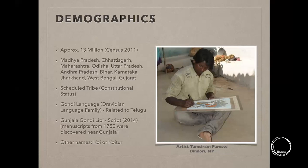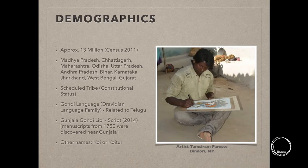According to the 2011 census, the Gond community is a large community distributed across various states — Madhya Pradesh, Chhattisgarh, Maharashtra, Odisha, Uttar Pradesh, Andhra Pradesh, Bihar, Karnataka, Jharkhand, West Bengal, Gujarat — every state has some population of Gond people. Constitutionally they are a Scheduled Tribe. Their language, Gondi, is closely related to Telugu and belongs to the Dravidian language family. In 2014, near a village called Gunjala, several manuscripts were found dating as far back as 1750, through which the Gunjala Gondi script was created — a precise script for the Gondi language.